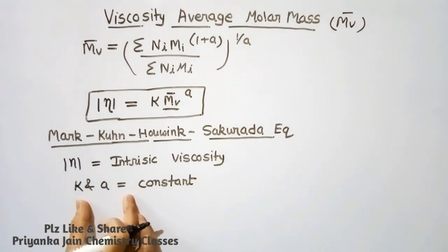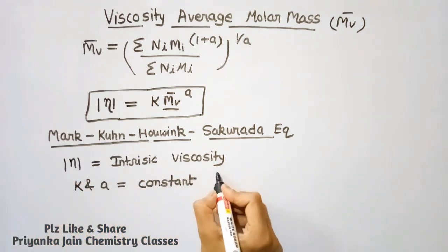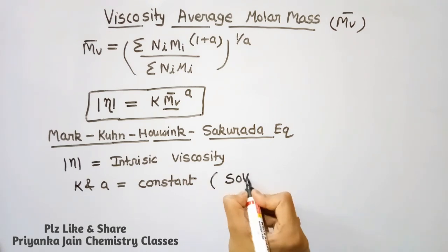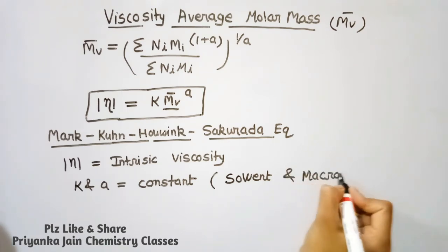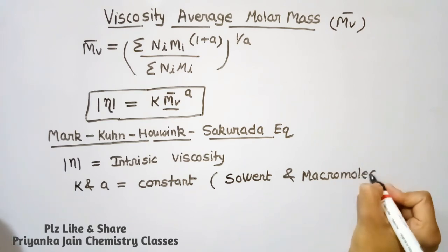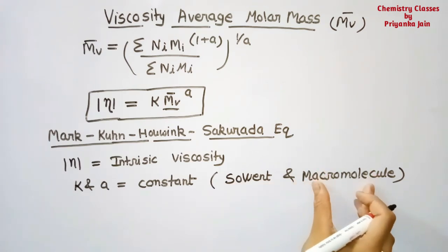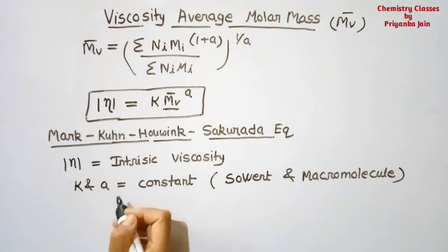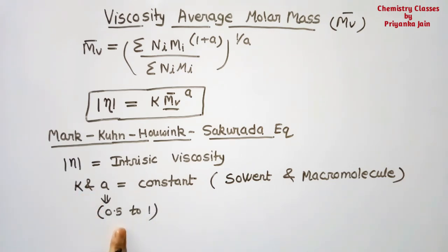The constants k and a in the Mark-Kuhn equation depend upon the nature of the solvent and the nature or geometry of the macromolecule. The value of a typically ranges from 0.5 to 1 and depends on the geometry of the macromolecule.